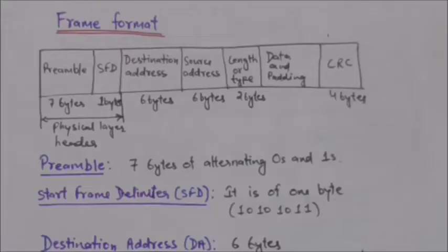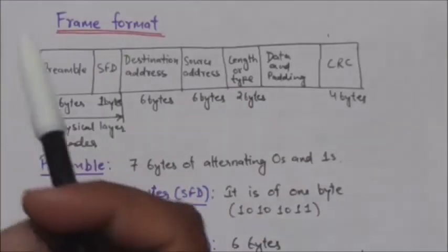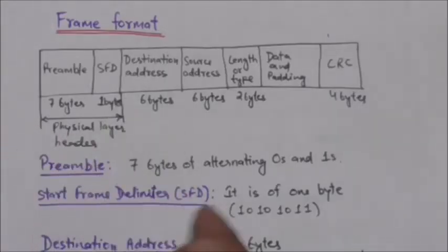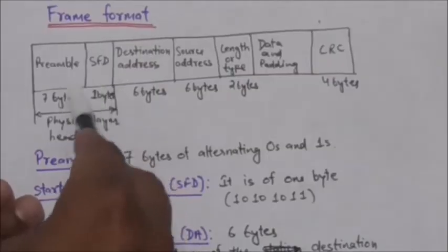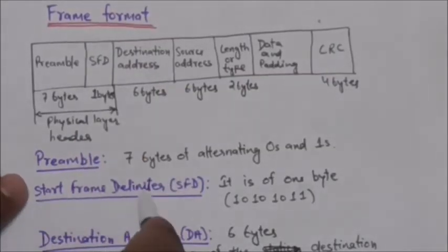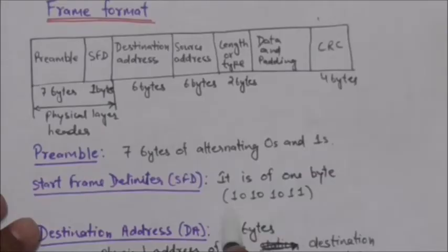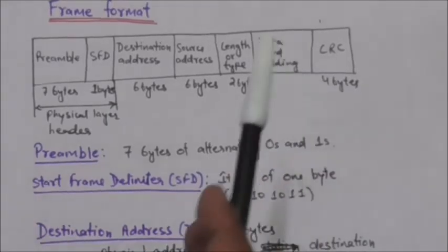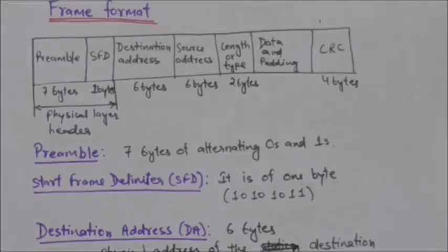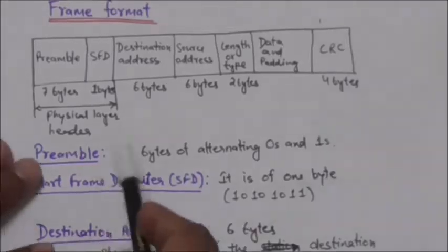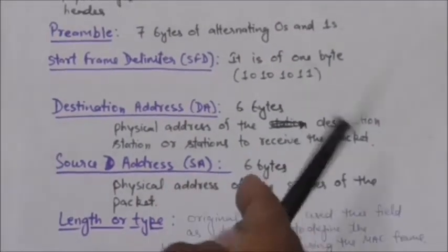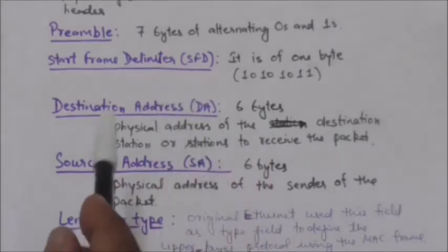The preamble is actually added at the physical layer and formally it is not a part of the frame. The next field is the Start Frame Delimiter, or SFD. The SFD is one byte — 10101011 — and it signals the beginning of the frame. It warns the station that this is the last chance for synchronization.